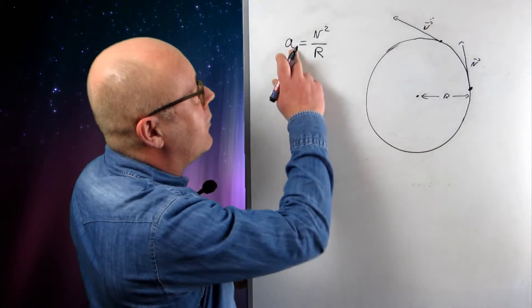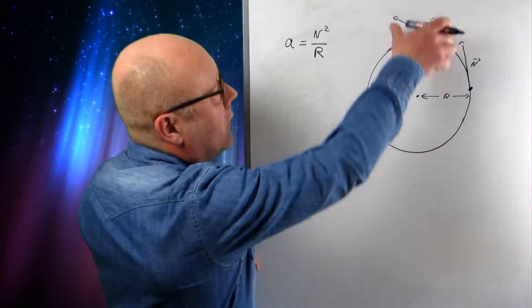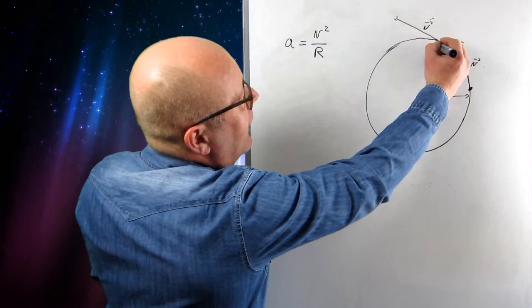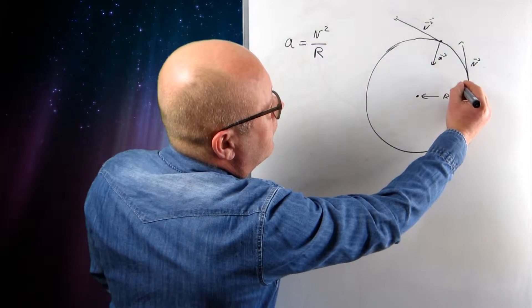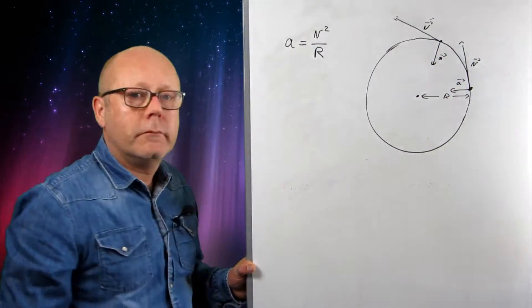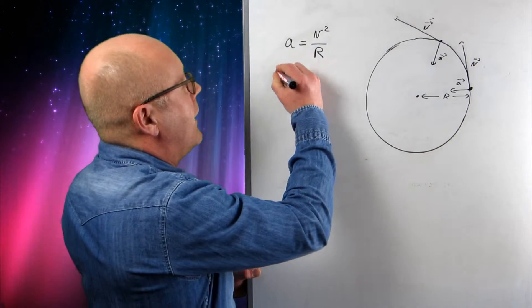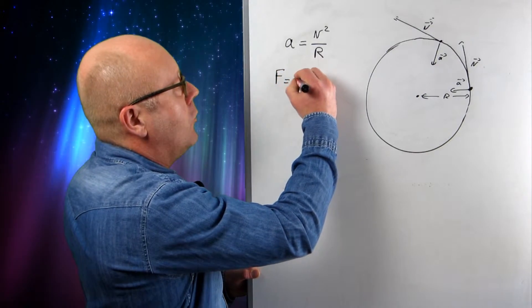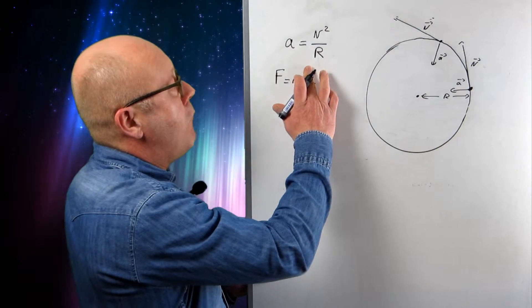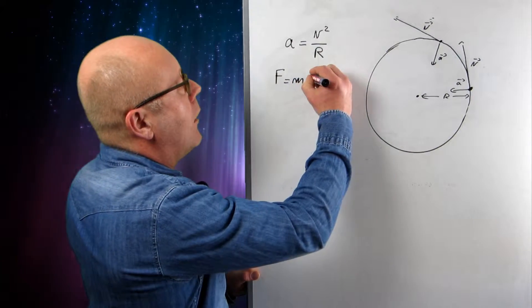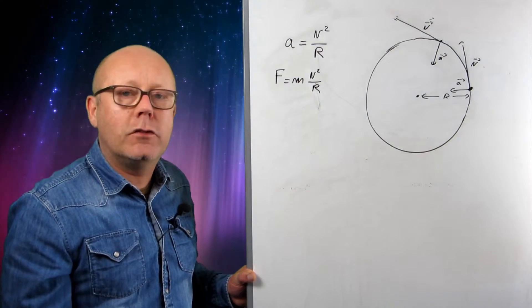Notice that the direction of the acceleration will be that of delta v. So if I took this vector and subtracted it from this one, I would find an acceleration towards the centre of the circle. Now, if there's an acceleration, there is a force. And if I apply Newton's second law, I find F = ma, and I can replace a by v² / r, m being the mass of the object in circular motion.